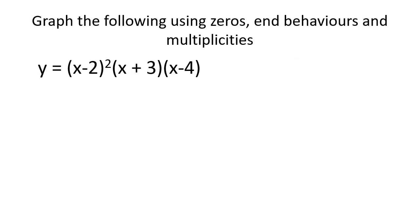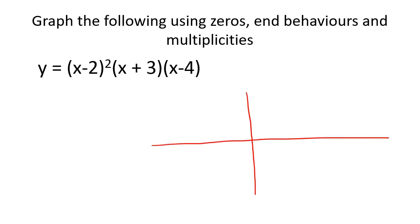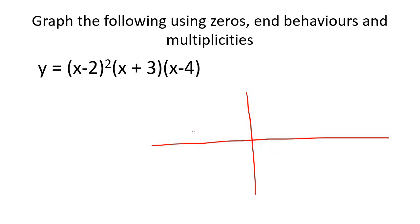So here's our first example. It says graph the following using the zeros, so let's start with that. The zeros is the place where the graph cuts the x-axis. To find the zeros, you just make the y value equal to zero.